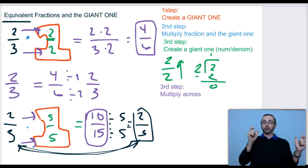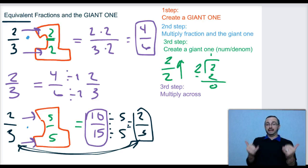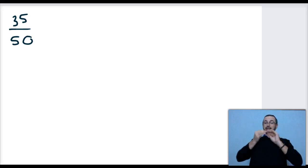That's how you use the giant one to make a larger equivalent fraction. Now we're going to take it to having a big fraction and then reducing using the giant one. That means we're going to make a smaller fraction.